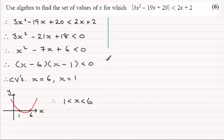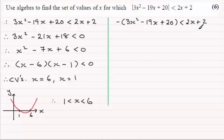Now what I do next is just consider when inside this modulus sign, this quantity here is negative. So what we've got is -(3x² - 19x + 20), and that is less than 2x + 2. And expanding this, we've got therefore -3x² + 19x - 20, and that is less than 2x + 2.